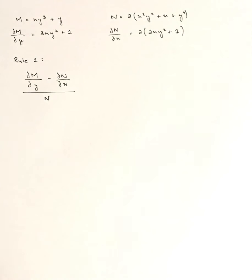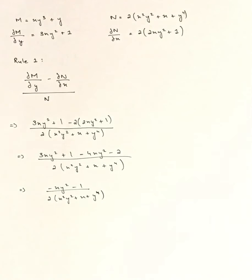Applying Rule 1: (∂M/∂y − ∂N/∂x) / N gives (−xy² − 1) / (2(x²y² + x + y⁴)). This function is not in terms of x alone and cannot be simplified further, so Rule 1 fails. We move on to Rule 2.